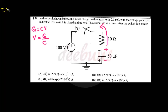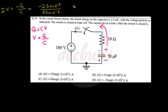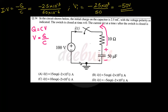Initial voltage vi = −q/C = −2.5 × 10⁻³ / (50 × 10⁻⁶) = −50V. So initial voltage is −50V. After the switch closes at t = 0, the full 100V source appears across the 50μF capacitor, so the final voltage is 100V.